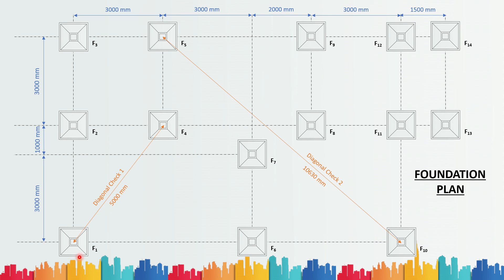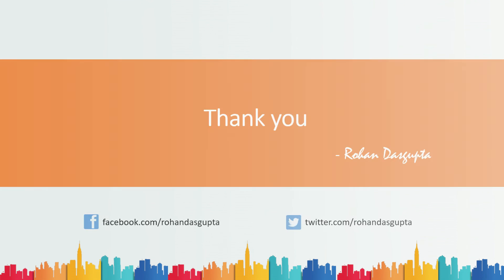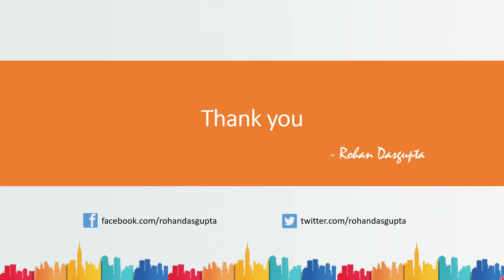To do a quick recap: first, you have the positions of the columns; then you mark the vertical center-to-center distance between each column; then the horizontal center-to-center distance; then for each column you provide the footing — either isolated or combined; then you name each and every footing; and finally you provide the diagonal checks. From a student's point of view, two diagonal checks are good enough. That's it for today's video — I hope you understood. If you have any doubts, write in the comments below. Thank you.